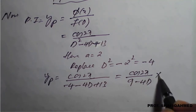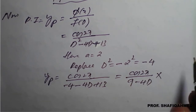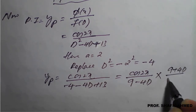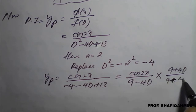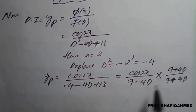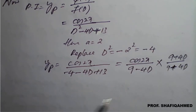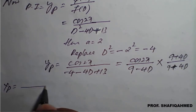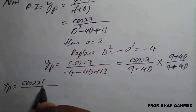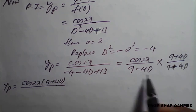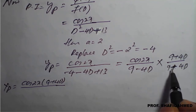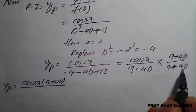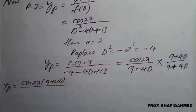To eliminate d from the denominator we rationalize by taking the conjugate. The conjugate of 9 minus 4d is 9 plus 4d, so we multiply and divide by 9 plus 4d. The denominator becomes 9 minus 4d times 9 plus 4d, which using the formula a squared minus b squared gives 9 squared minus 4d whole squared.